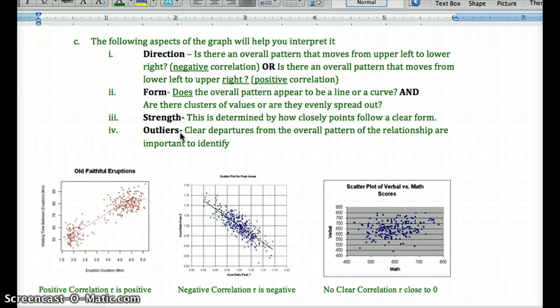Then strength. The strength of the relationship would be, is there a clear form? Meaning, do we clearly see that the data tends to increase together? Or are there departures from it? Meaning, are there like outliers that are setting us off? And if we have outliers, it'll really change our residuals and how we calculate our best fit line.